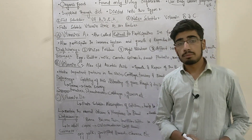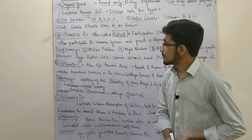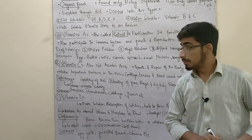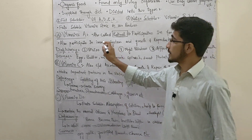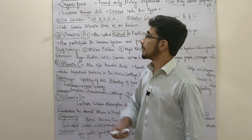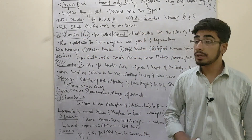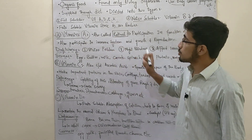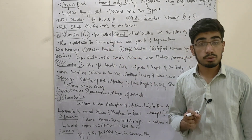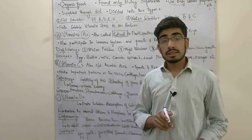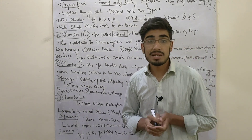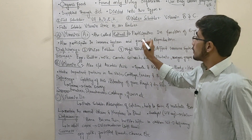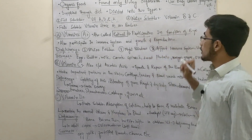The main type of vitamin A is vitamin A, also called retinal. Vitamin A is called retinal because of its participation in the function of the eye.